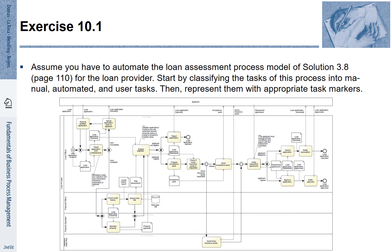Exercise 10.1 illustrates this first step. The task of this first step is usually as follows: we assume that we have a BPMN model available. We now go step by step through each of the activities shown in this process and determine if we should represent them as manual, automated, or user tasks. In our modeling tool, we choose the appropriate task markers for each of these tasks.